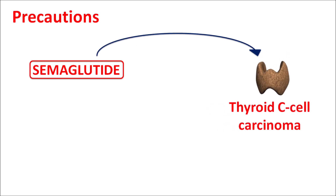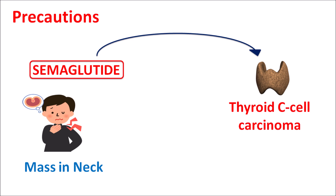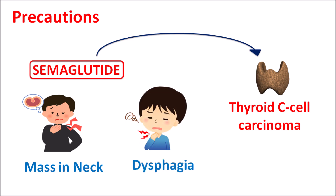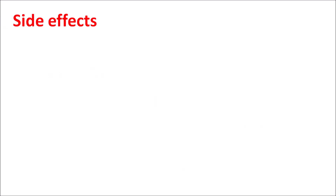Semaglutide may increase the risk of thyroid C-cell carcinoma, so thyroid cancer risk is increased with long-term semaglutide therapy. It can develop a mass within the neck resulting in dysphagia — difficulty in swallowing. That is why semaglutide is not indicated as a first-line therapy; it can be combined with other anti-diabetic agents in order to reduce the risk of thyroid cancer.